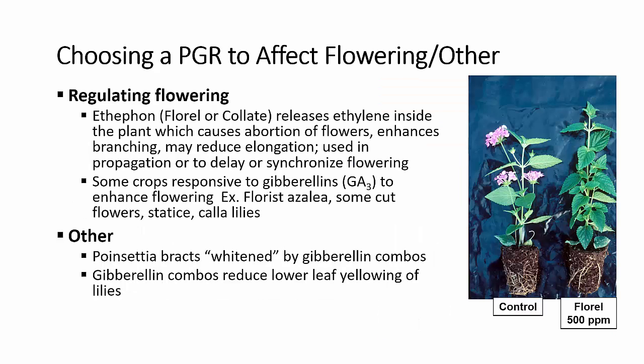We can also affect flowering or a few other processes. To affect flowering we're typically using ethephon, and this releases ethylene inside the plant to cause abortion of flowers. It may also enhance branching or reduce stem elongation. It can be used in propagation to remove flowers so that more energy goes into rooting of the plant, or we can use it to synchronize flowering for a market date.